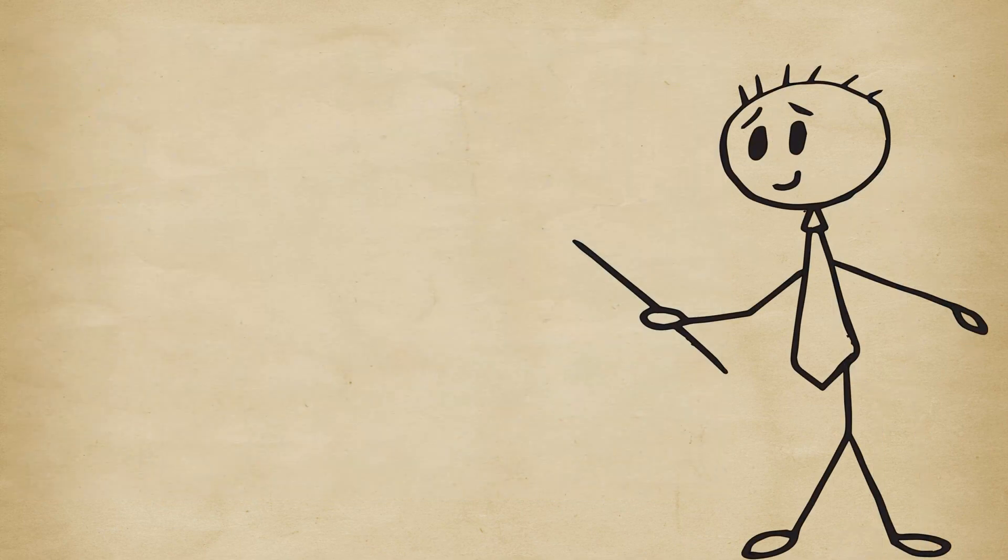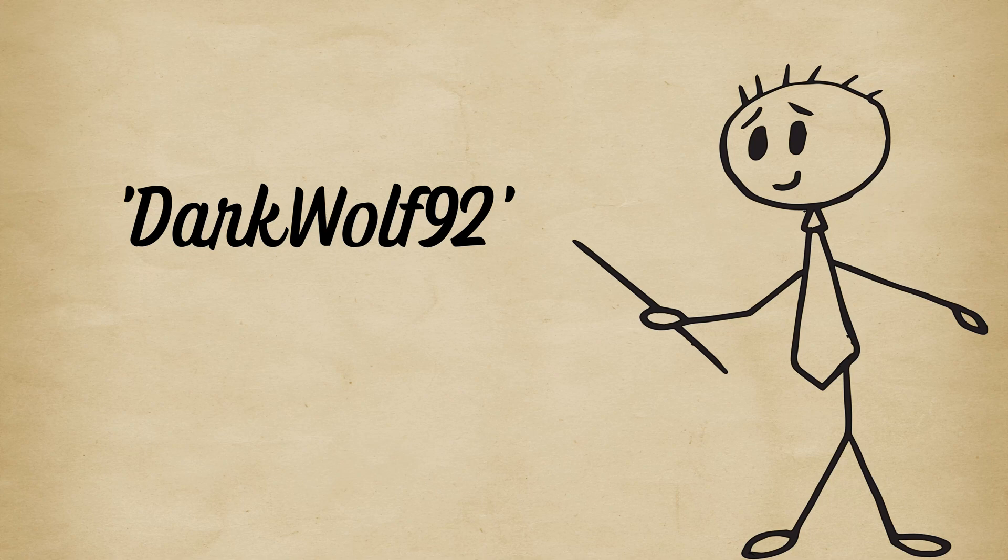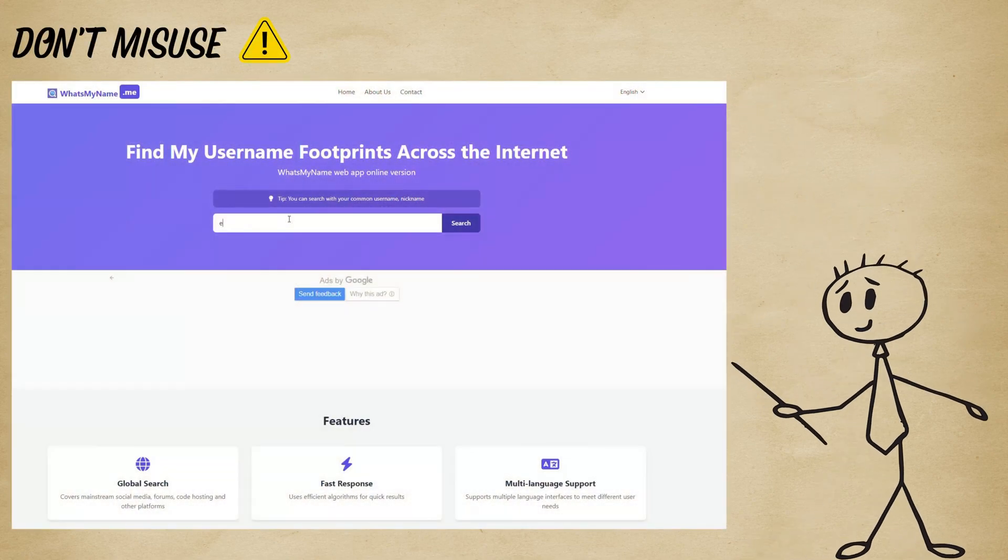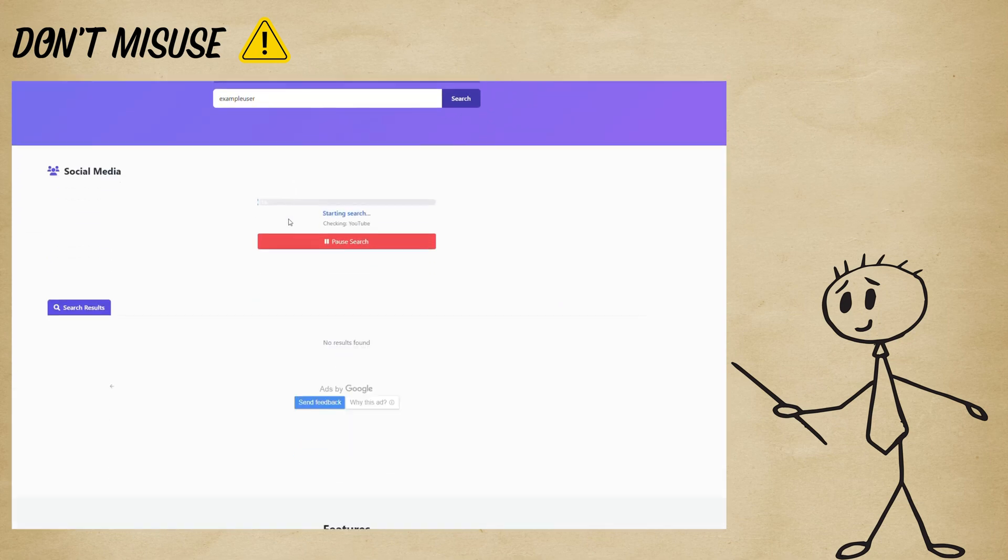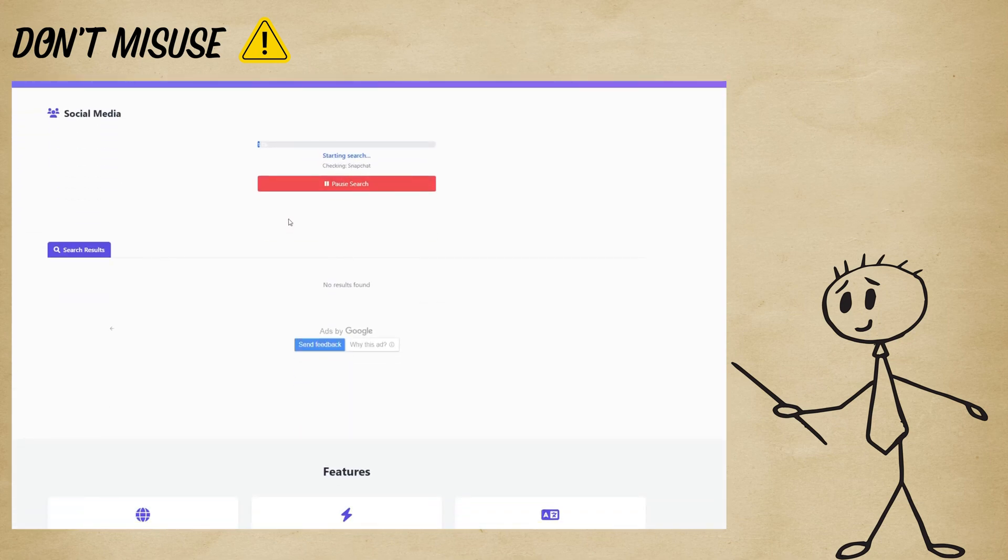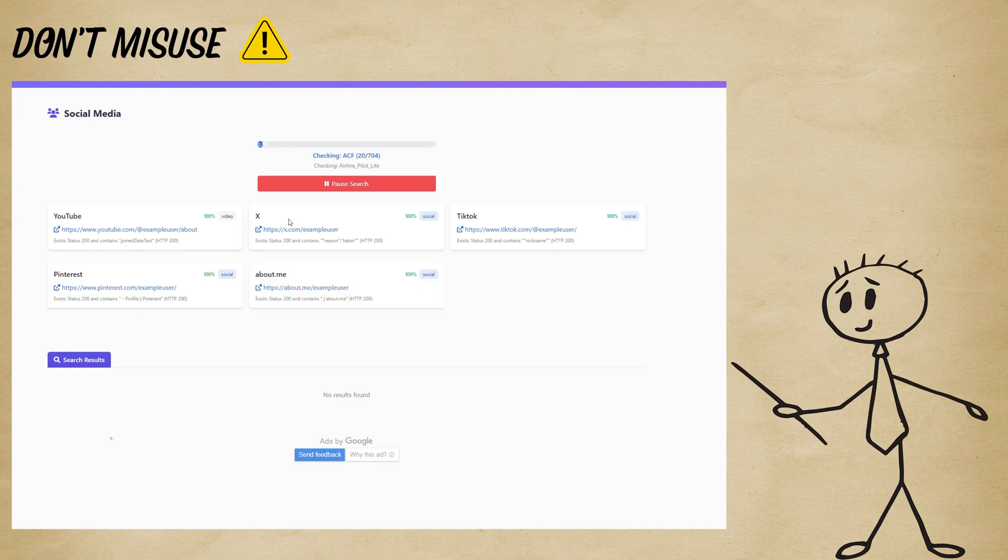Imagine someone has a unique username like DarkWolf92. A single search can reveal their Twitter profile, their Pinterest board, a GitHub repository, and even a decade-old blog they forgot existed. Each profile is a goldmine of personal details, hobbies, location clues, and sometimes even their real name.